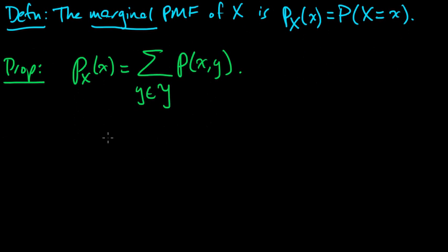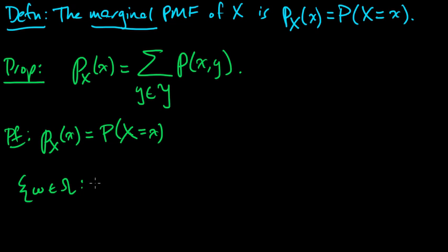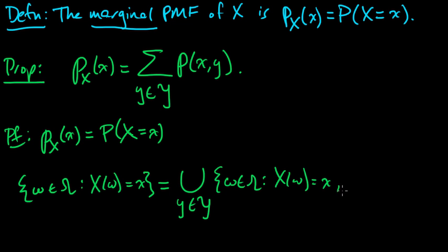And let me prove this briefly. So this is equal to, by definition, the probability that X takes a particular value. And by this notation, we just mean the probability of the set of omegas in our space such that X(ω) equals little x. And this set can be written as a union over all the y's of the sets: ω in Ω where X(ω) = x and Y(ω) = y.